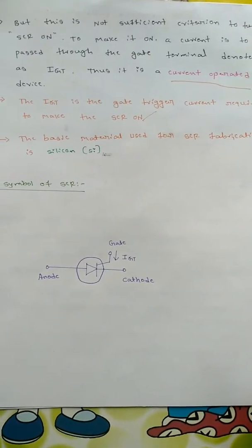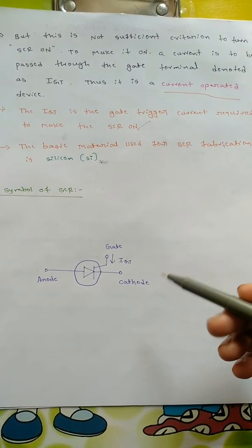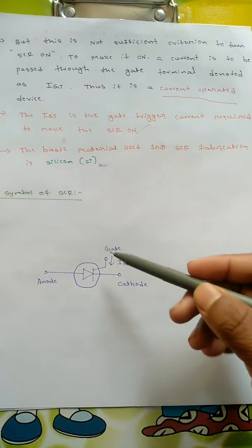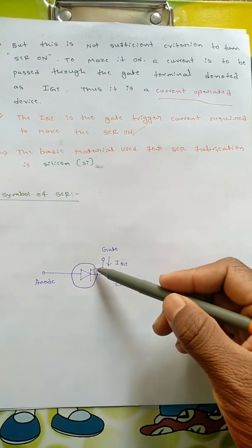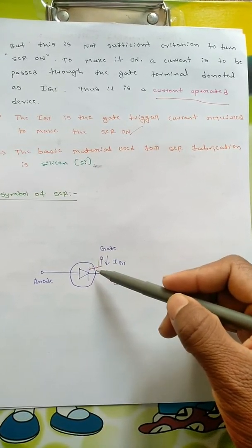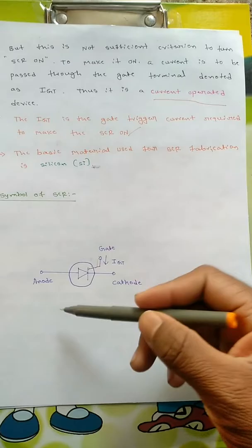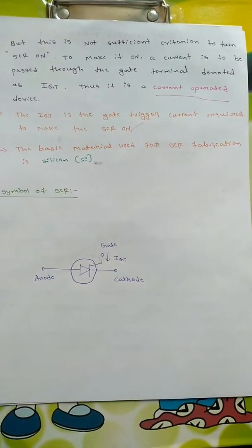Now coming to the symbol of SCR, it is similar to the diode but a gate is added here. There is a gate terminal here and the rest of the things - anode, cathode, and other symbol will be same.